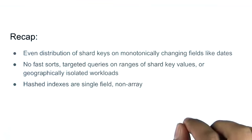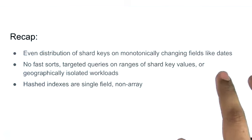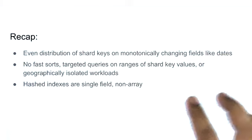To recap, hashed shard keys provide more even distribution of data of a monotonically changing shard key field. Hashed shard keys do not support fast sorts, targeted queries on ranges of shard key values, or geographically isolated workloads. Finally, hashed indexes are single fields and do not support arrays.